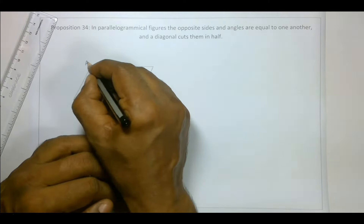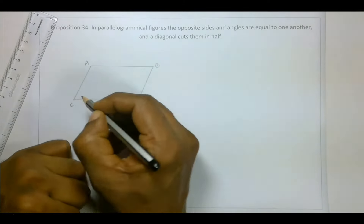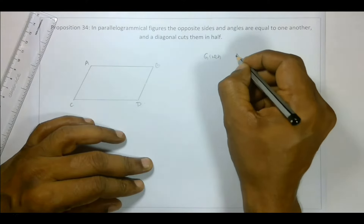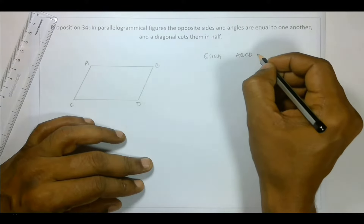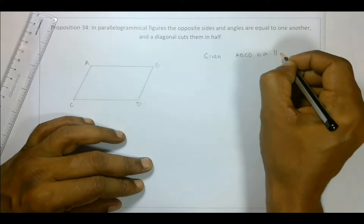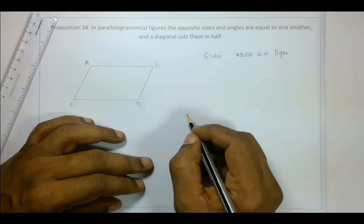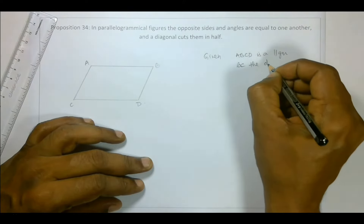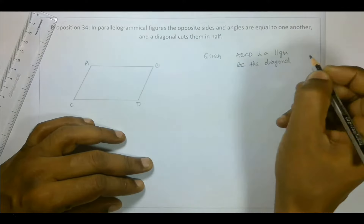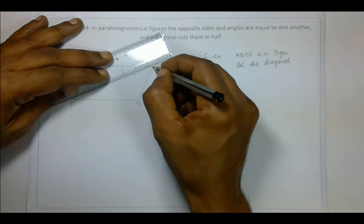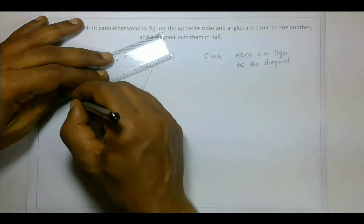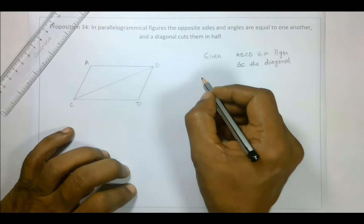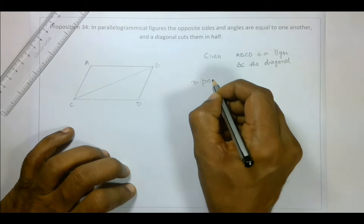Let's say ABCD. What is given: ABCD is a parallelogram, and BC is the diagonal. So let's connect BC.